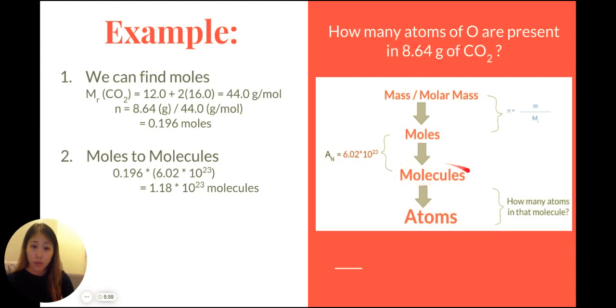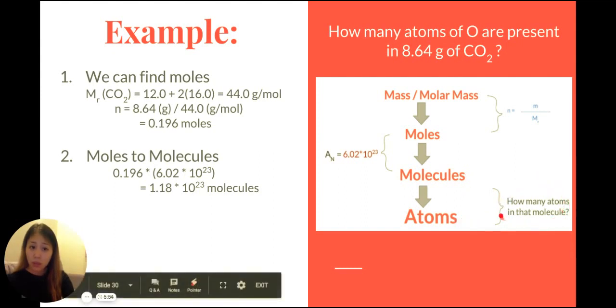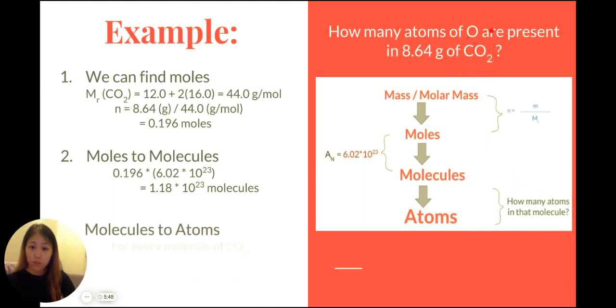So now we have to move from the molecules to the atoms. Now we have to think how many atoms are in that molecule. We're asking for oxygen atoms. We see that in one molecule of carbon dioxide, we have two atoms of oxygen.